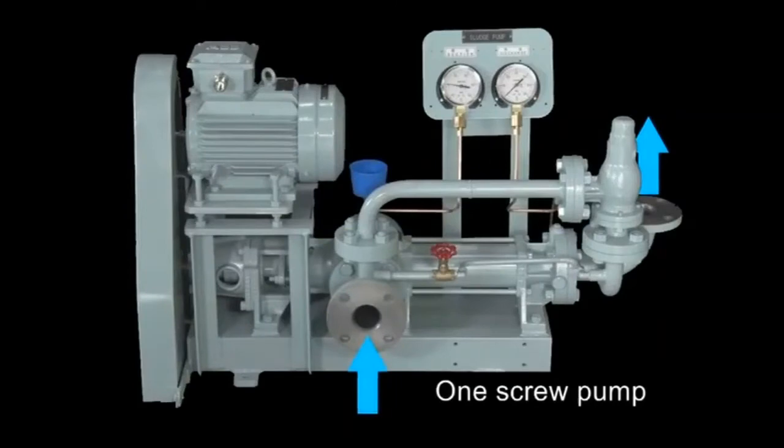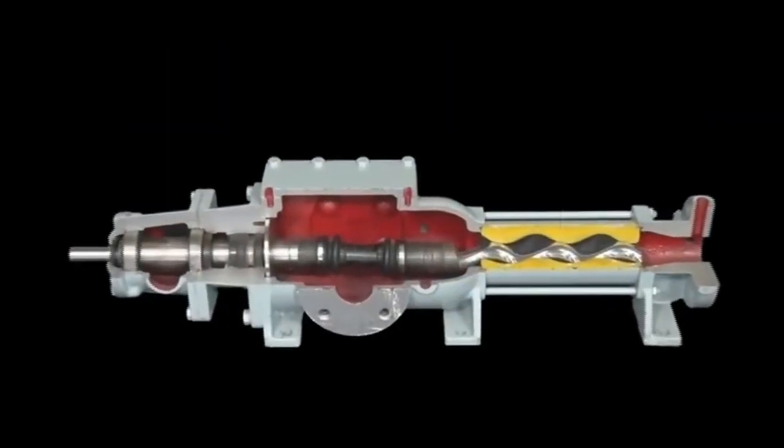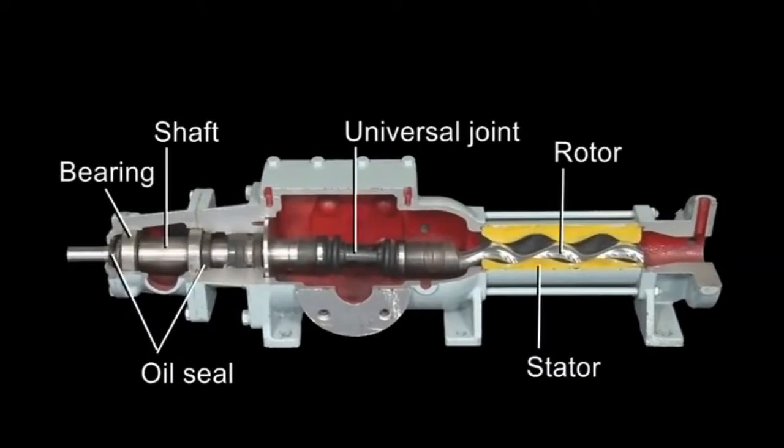The structure of the one screw pump is like this. Components are the oil seal, bearing, shaft, universal joint, stator and rotor.